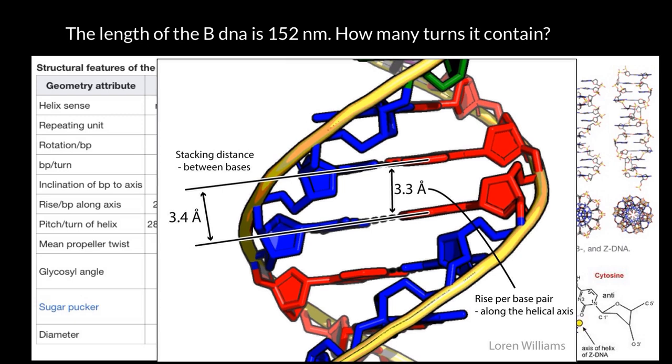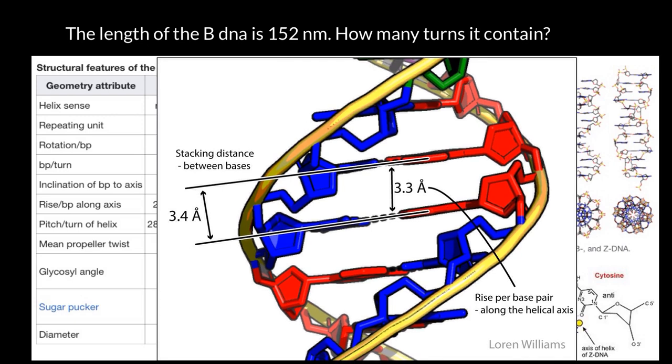Take a look at this picture that I also found on the internet. As you see here, depending on the point where we take measurements, we can get different numbers. For example, here we're going to get 3.3 angstroms, and if we take measurements here, we're going to get 3.4 angstroms.